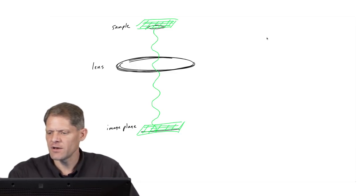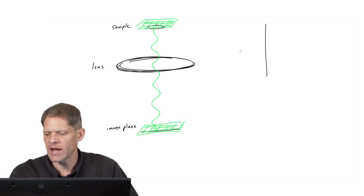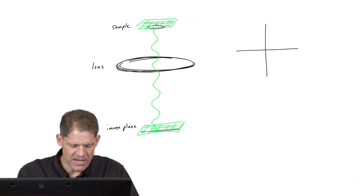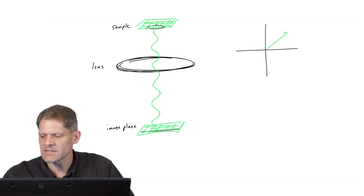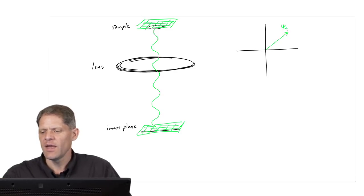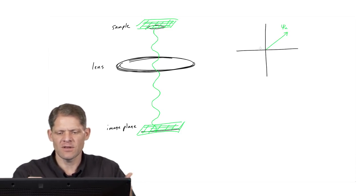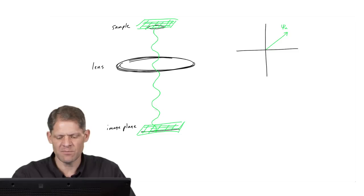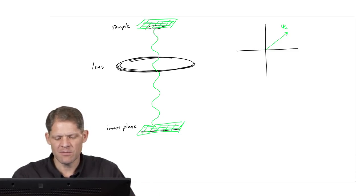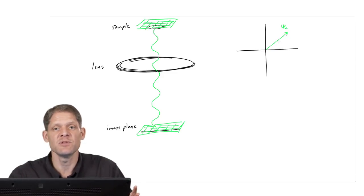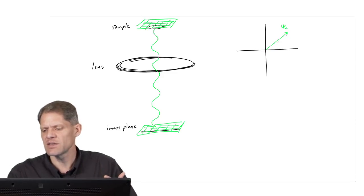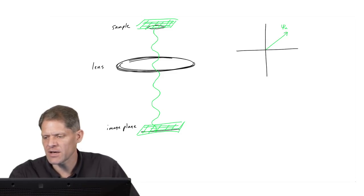Let's draw an Argand diagram now and represent that unscattered part of the electron beam as a vector — let's call it psi unscattered. It has an arbitrary phase: there were a number of wavelengths as it passed from the sample to the image plane, and so it will hit the image plane with some arbitrary phase. Here I've drawn it at approximately 45 degrees, but that's not the important thing.